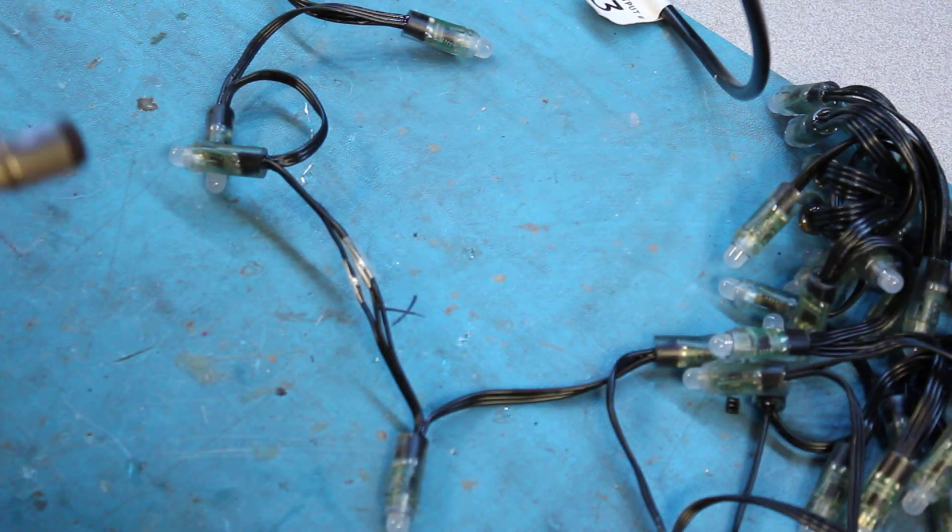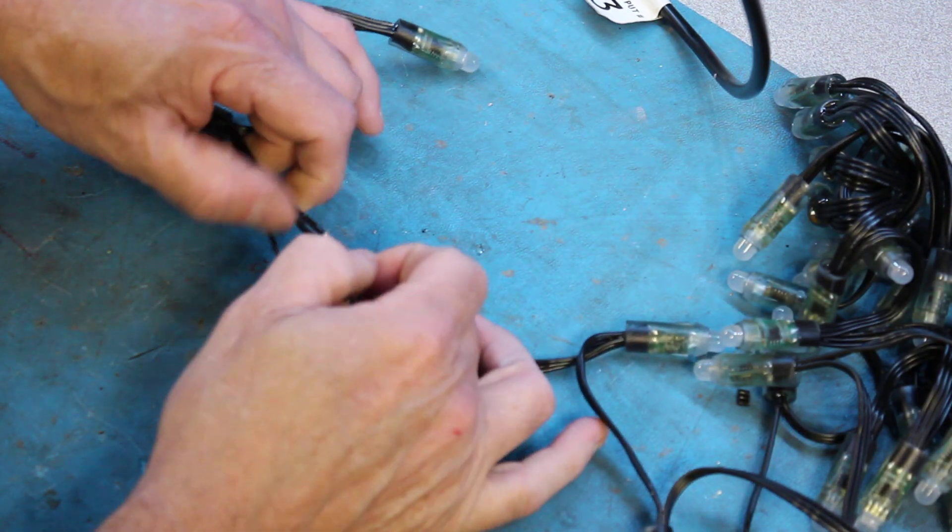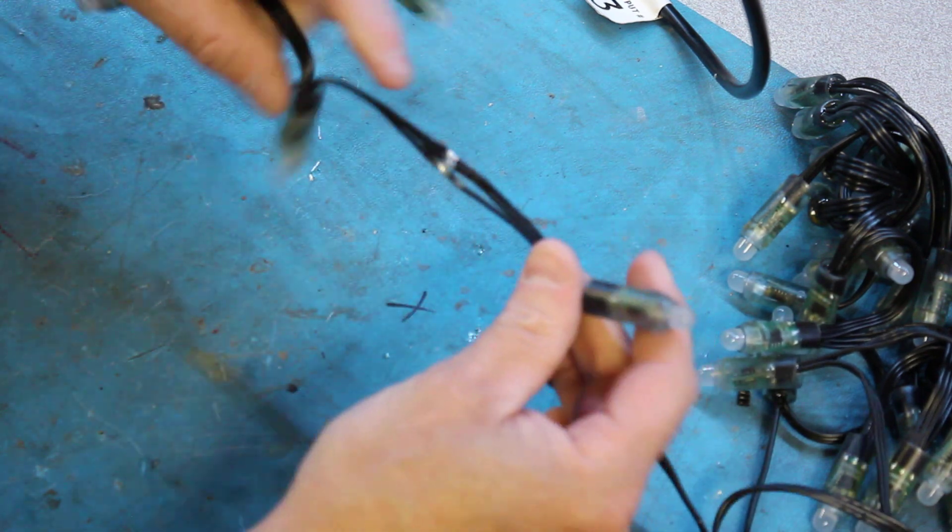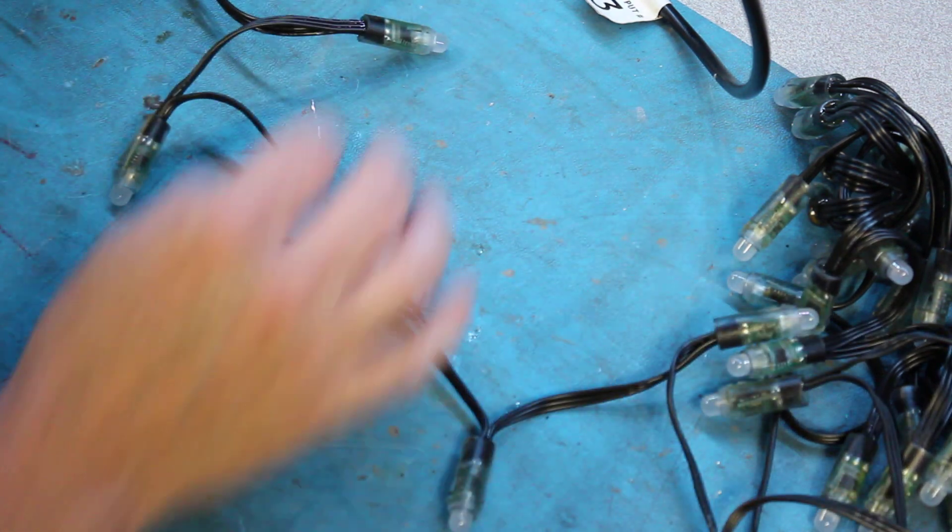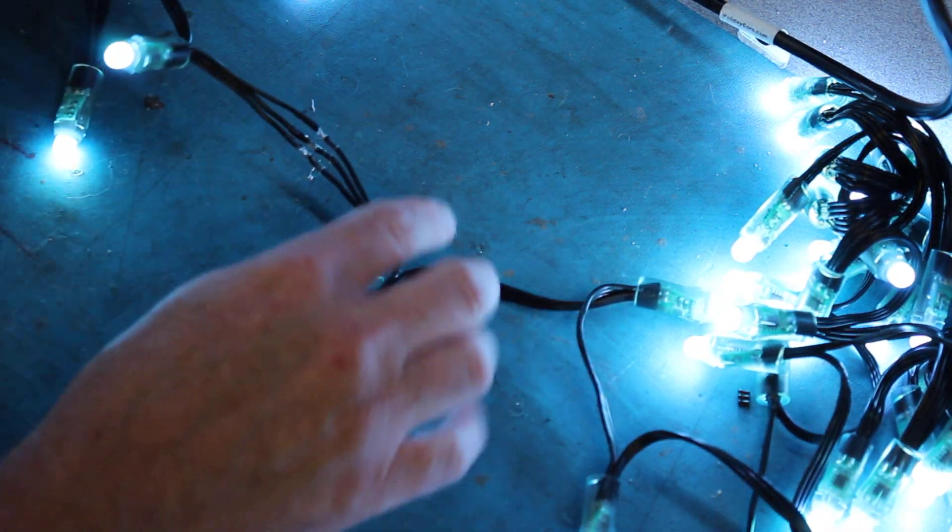And I'm going to slide the shrink wrap tubing over this. Just give it a quick little heat with the torch and you can see that we've made a nice, good connection. So now let's go ahead and test it again. And you can see that now our string works completely.